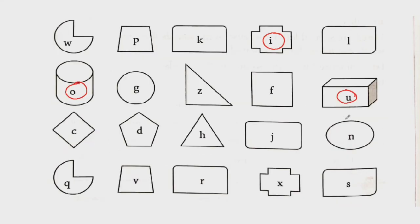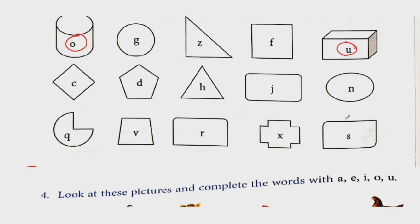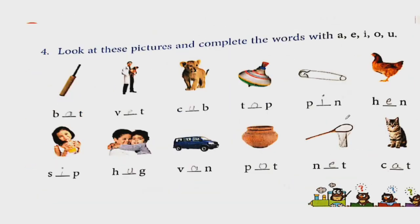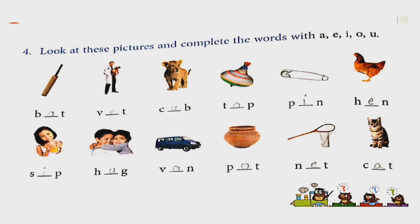Below there are also some letters: C, D, H, J, N, Q, V, R, X, S. But none of these are vowels. Now look at the next question. Look at this picture and complete the words with A, E, I, O and U. You have to use vowels to fill in the blanks for these pictures' words. First picture is of what? This is a bat. So bat, you will use vowel A: B, A, T, bat.